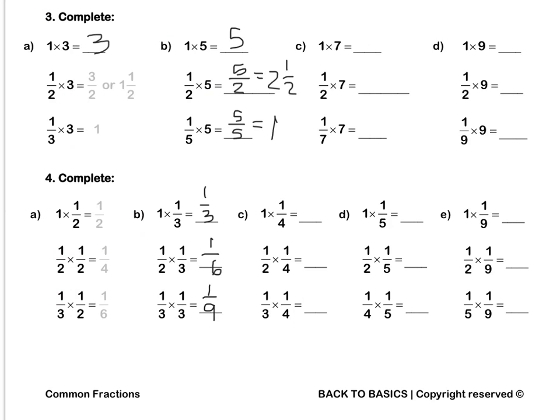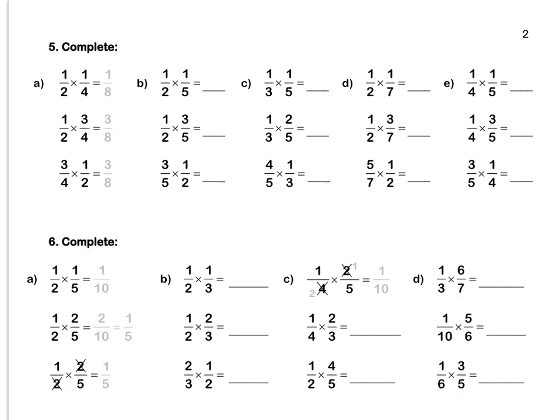Press pause to complete the question by yourself. Question 5. A half times a quarter: 1 times 1 is 1, 2 times 4 is 8, it's 1 eighth. A half times 3 quarters: 1 times 3 is 3, 2 times 4 is 8. And lastly, 3 quarters times a half is also 3 eighths.